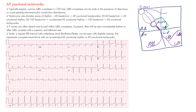These AV junctional rhythms are differentiated based on rate. The ventricular rate dictates the name of the rhythm. The sinus node has an intrinsic rate of about 60 to 100 beats per minute, with many gap junction cells allowing fast impulse flow. At the AV node there are fewer gap junction cells, allowing for the delay. The intrinsic rate of the AV junctional region is between 40 and 60 beats per minute. Ventricular cells have a slower intrinsic rate of 20 to 40 beats per minute.